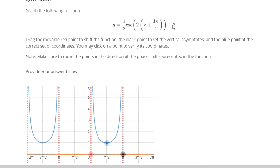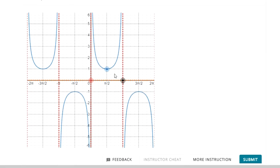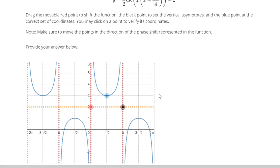So cosecant, we can start with maybe the midline. That's plus 2, so y equals 2 is our midline, and that's done by dragging the red dot.